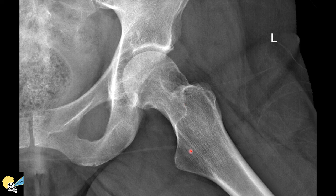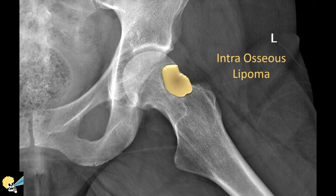This is a case of an intraosseous lipoma, a focal bone lesion of the femoral neck, and not a systemic process such as Paget's disease, chronic anemia, metabolic bone disease, or osteoporosis.